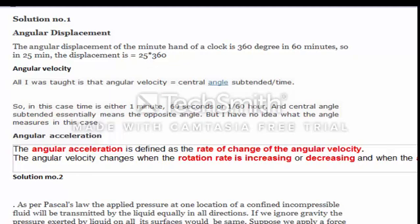Angular velocity: all I was taught is that angular velocity equals central angle subtended slash time. So in this case time is either 1 minute, 60 seconds or 1/60 hour, and central angle subtended essentially means the opposite angle.